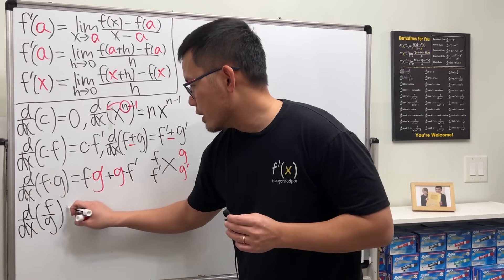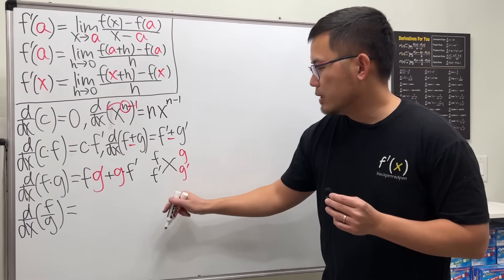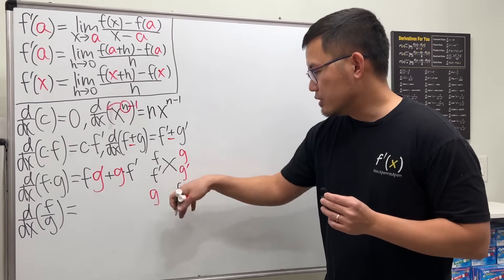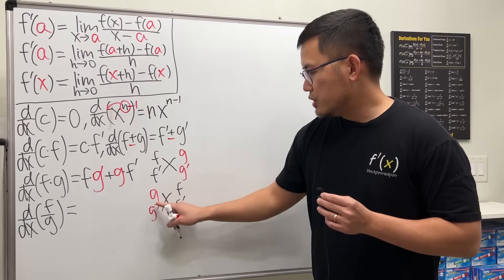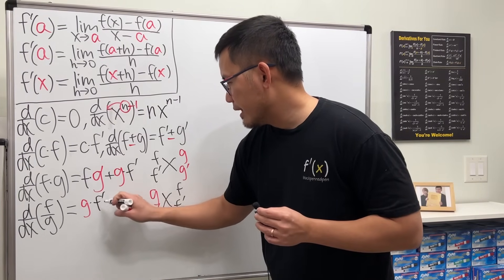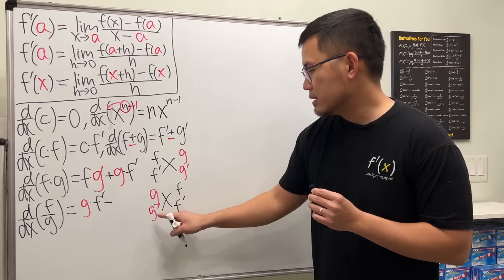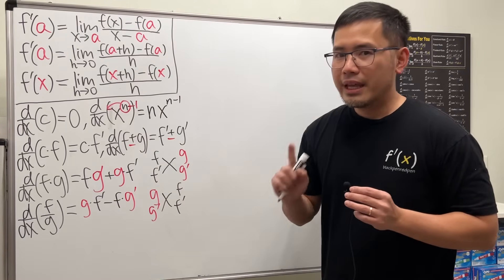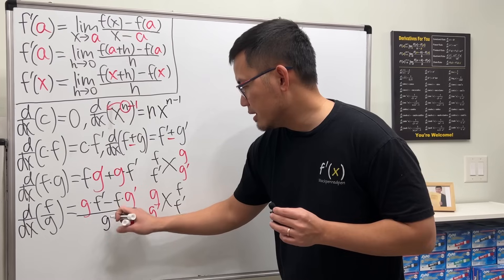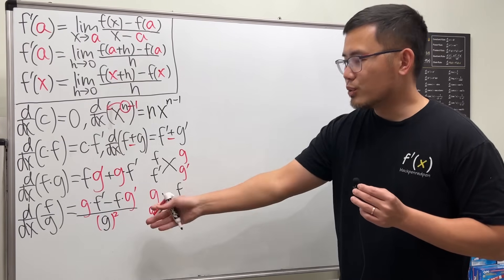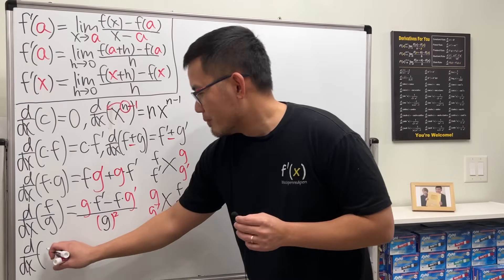After the product rule we have the quotient rule for f over g. Remember, the quotient rule is the opposite of the product rule. Instead of f and g, write g first, then f. You still differentiate each: g times f prime goes to the top, then subtract f times g prime — so we subtract instead of add. All of this is divided by the denominator squared, g squared.